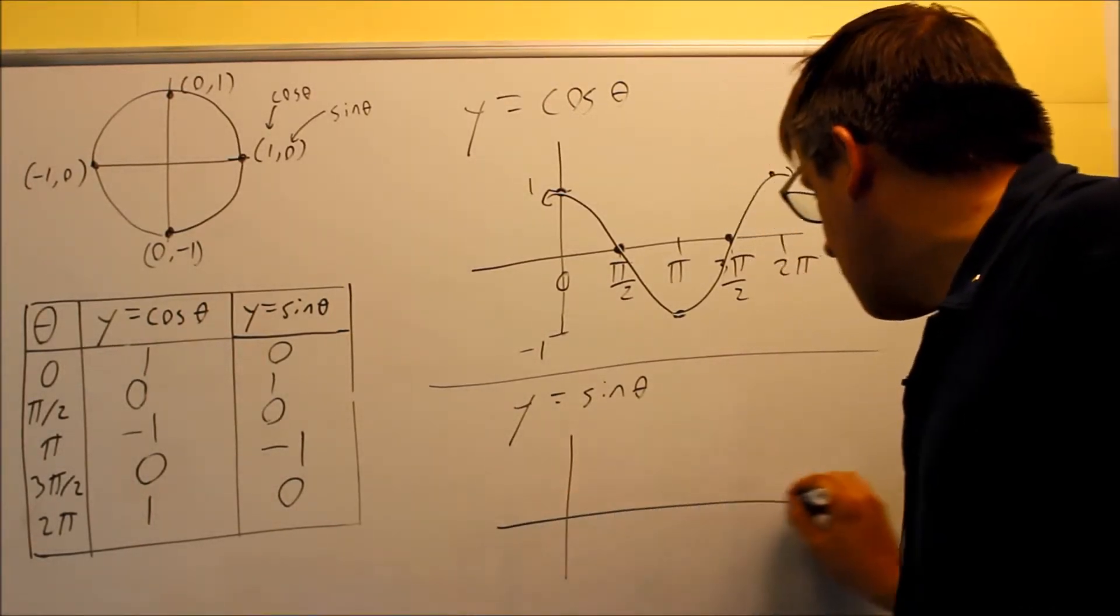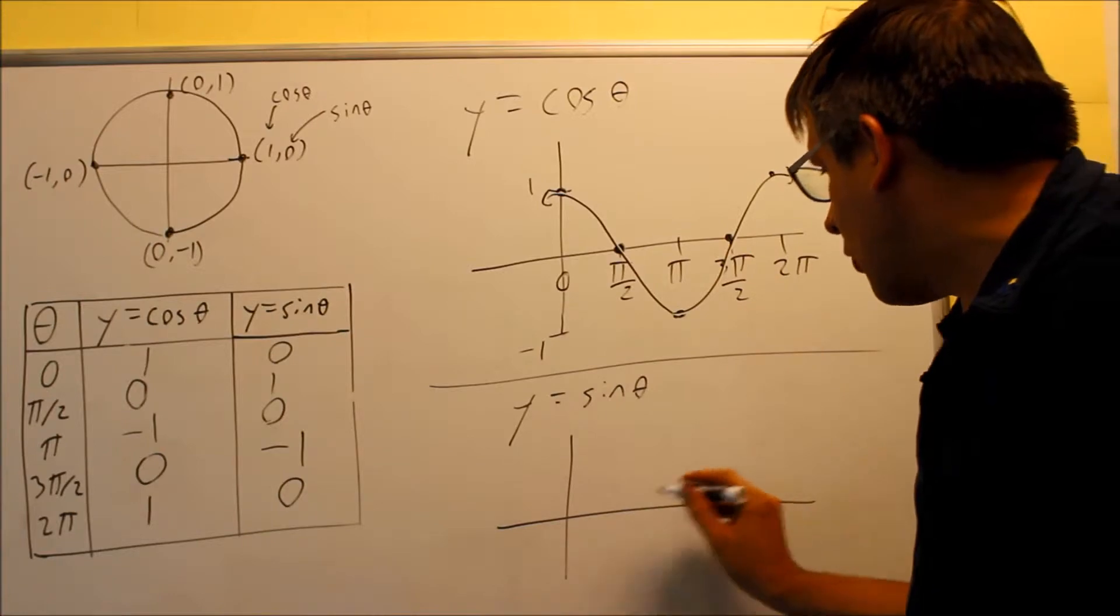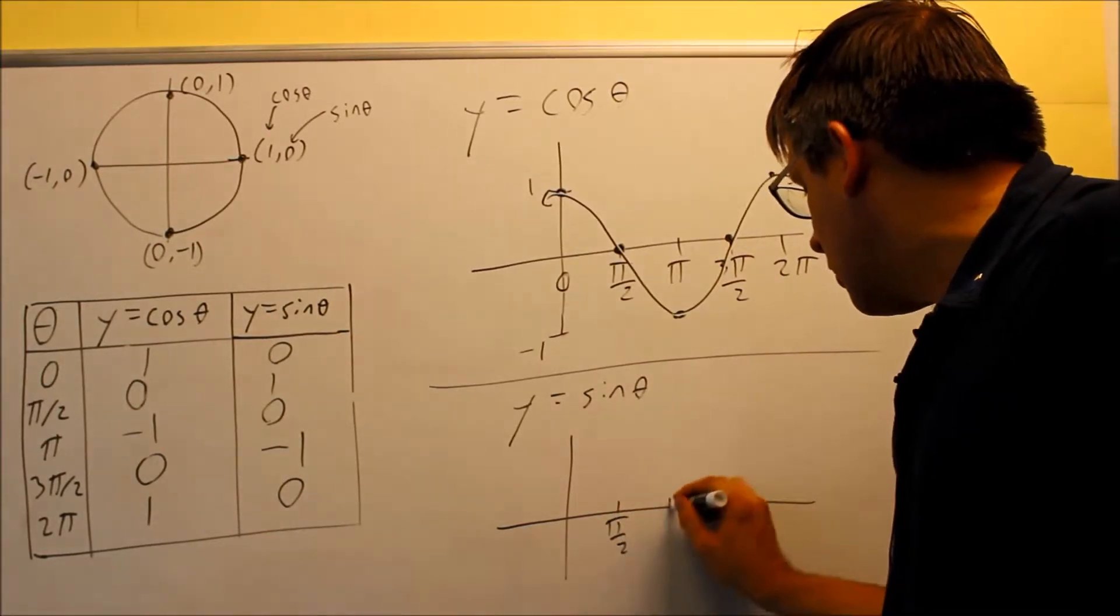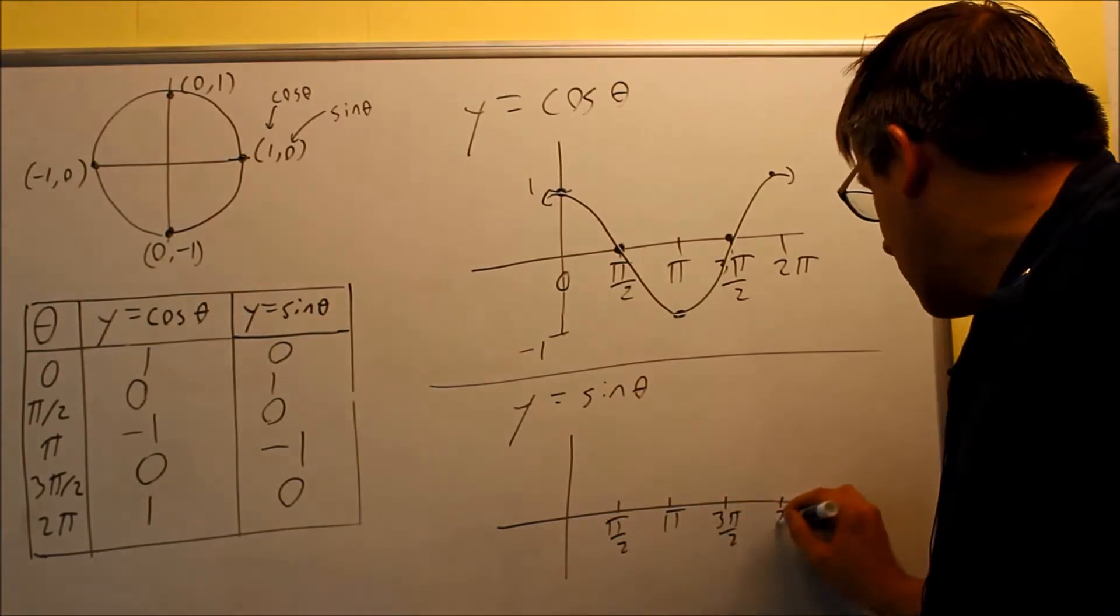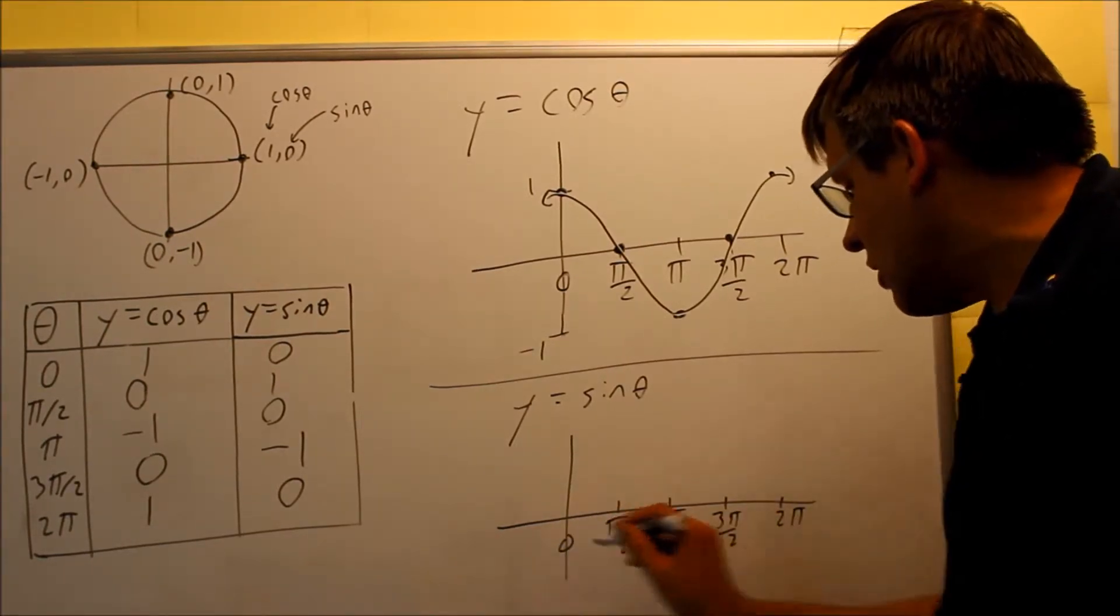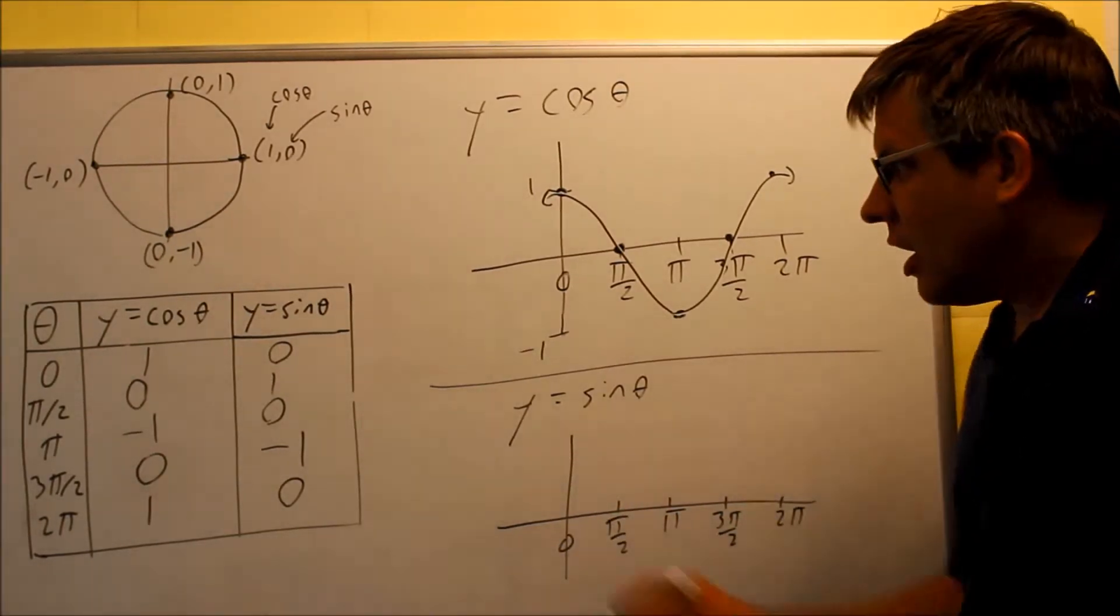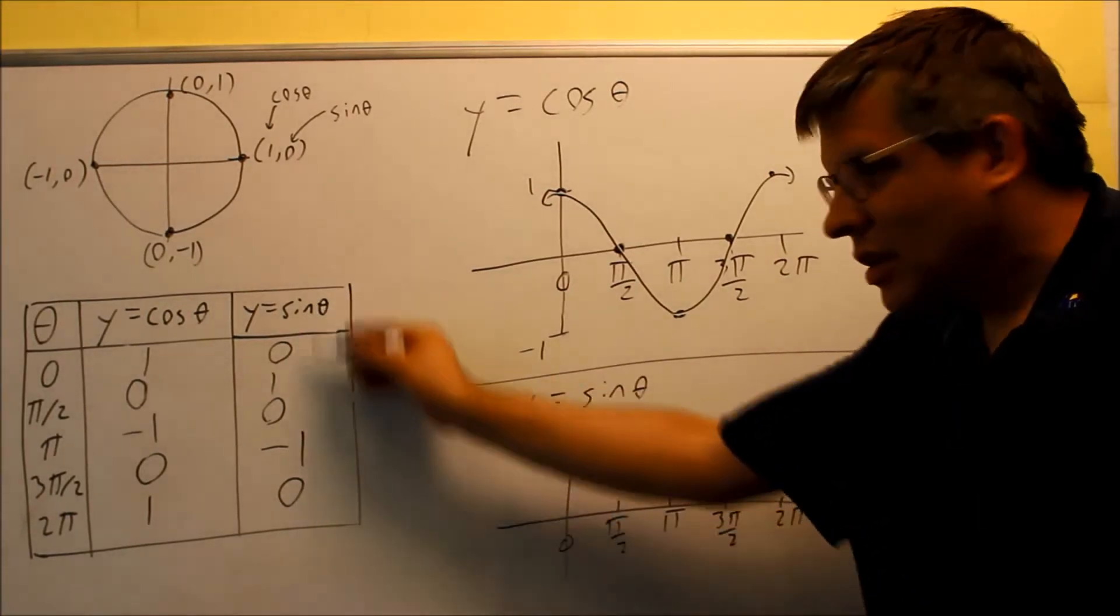Okay, so let me do the same thing again. I'm going to put the same values I had before: pi over two, pi, three pi over two, and two pi. These are the same values again. Here's the zero down there. And I'm going to grab the values off of this column.